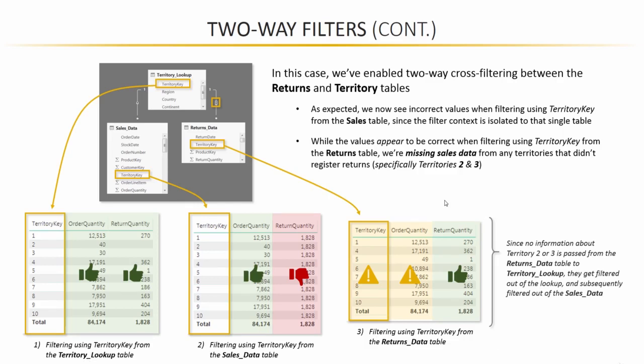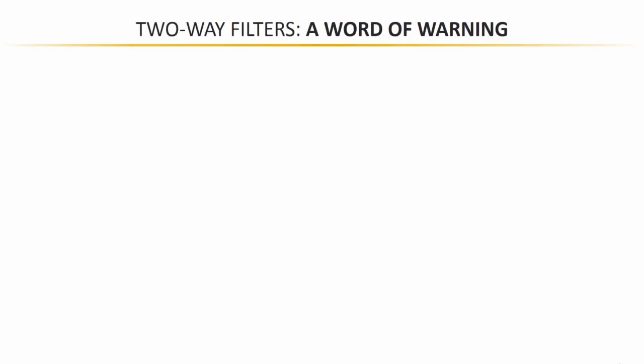So the filter context that we created by using this territory key field from the returns table is properly flowing up to the territory lookup and then down to the sales table. But in doing so, it's yielding misleading data. And this is dangerous because this type of issue can be very difficult to detect, even if you know your data model inside and out. So had we not gone through this exercise, we may never have realized that territory 2 actually drove an order quantity of 40 and territory 3 drove an order quantity of 30.